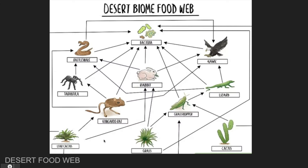Our first food web is an example of a desert food web. Food webs are tools that scientists use that have different arrows pointing from different organisms to show how energy travels from one organism, like this cactus plant, to another organism, like this kangaroo rat or this rabbit. And there are many different levels that show how energy transfers.